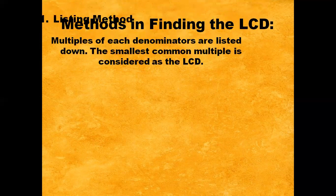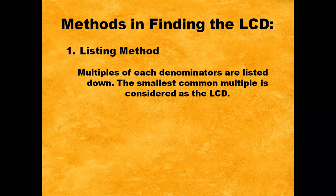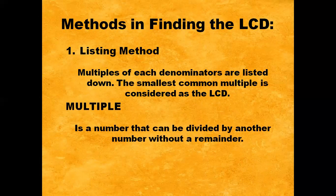First, the Listing Method. In the Listing Method, multiples of each denominator are listed down. The smallest common multiple is considered as the LCD or the Least Common Denominator. A multiple is a number that can be divided by another number without a remainder.